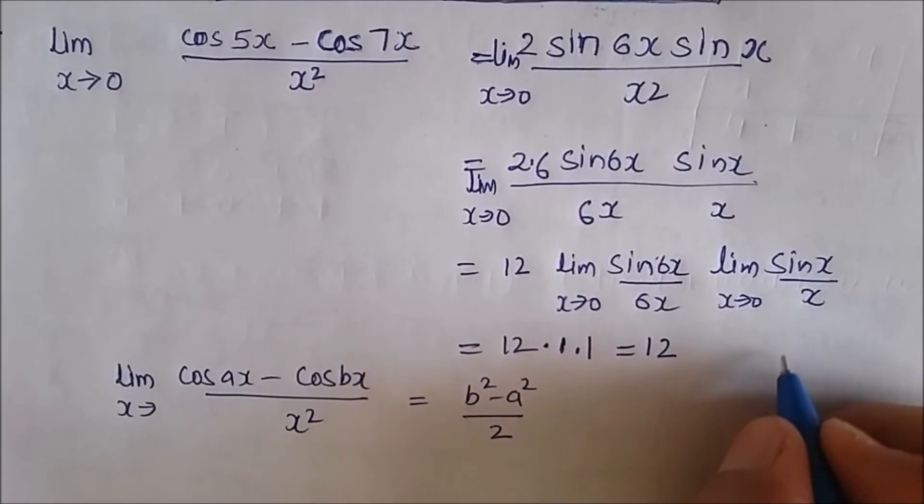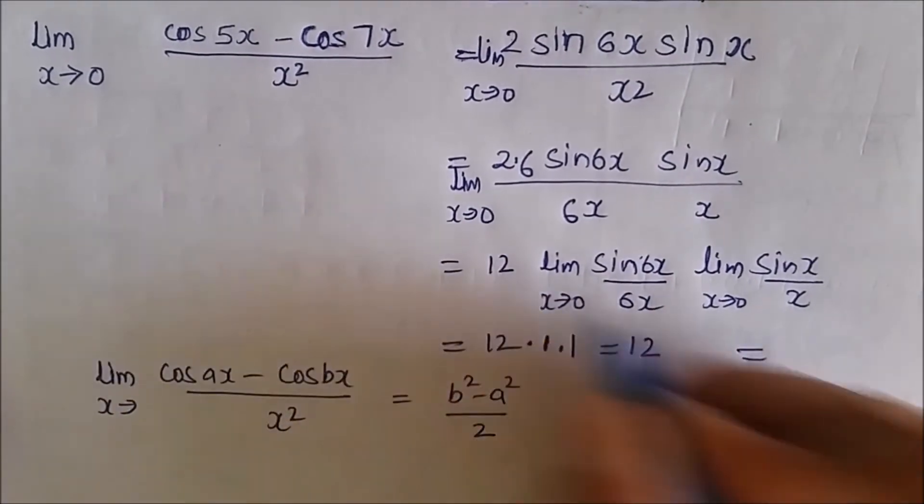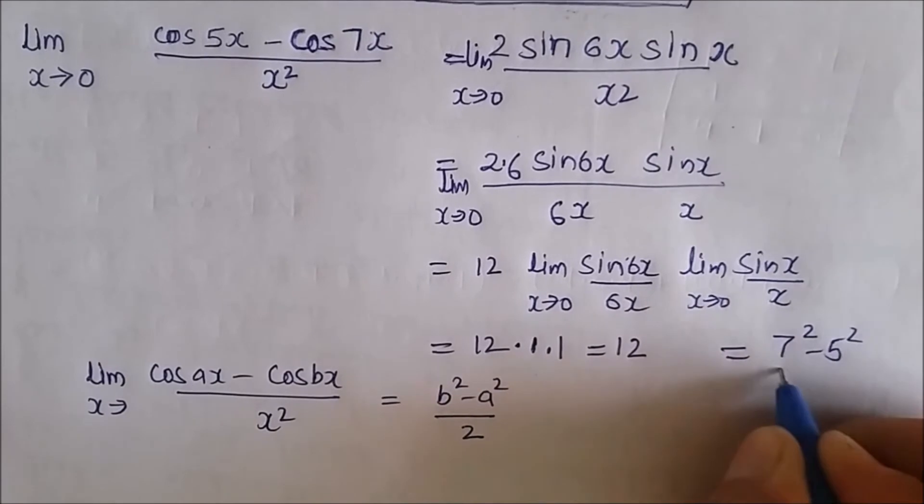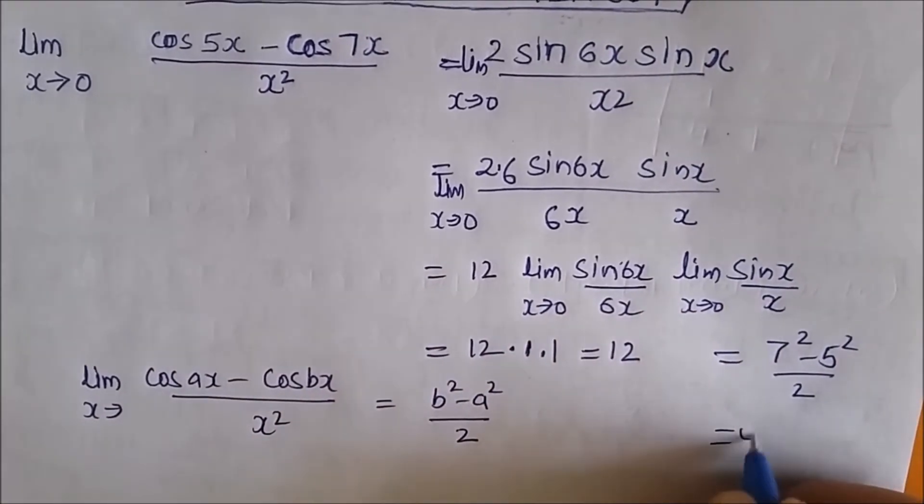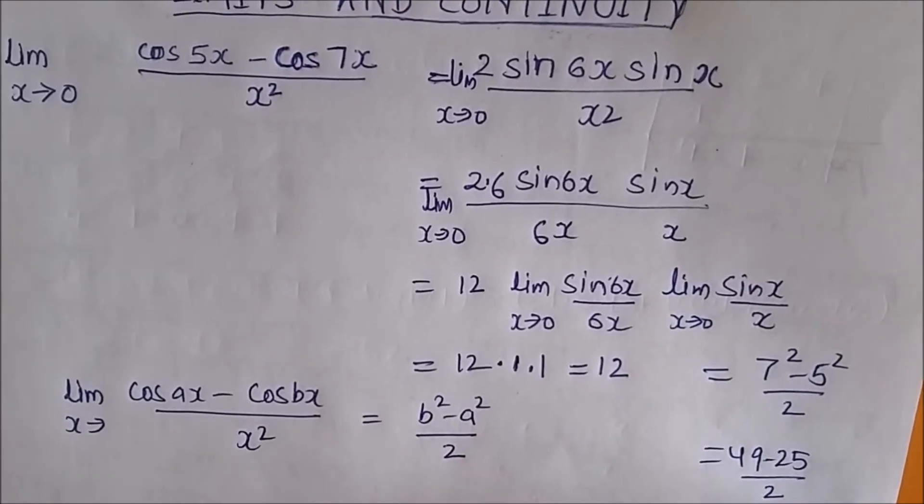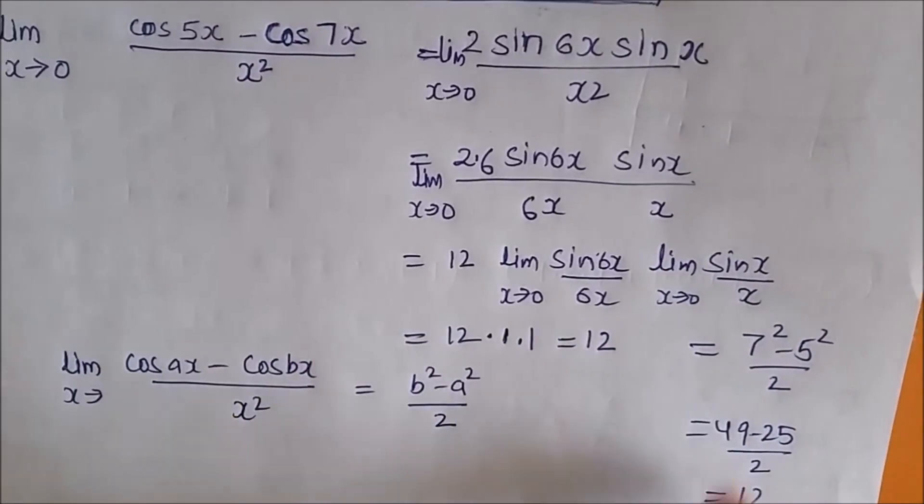For this particular question, the answer is, let me write it here: b² means 7² minus a² upon 2. This is 49 minus 25 upon 2, and this is 24 upon 2, that is 12. Directly you can come to your answer.